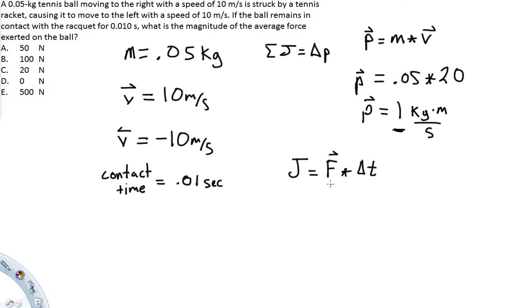So now what we want to figure out is the force. So what we are going to do is we are going to divide over the delta T. So force is going to be equal to the impulse divided by the change in time. Which that comes out to be, what we calculated earlier,